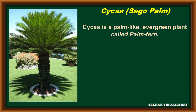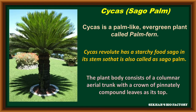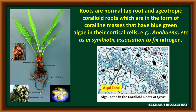Cycas plant is also called Sago palm. It is an evergreen plant also called palm fern. The starch extracted from its stem is called Sago, and because of this starch in its stem, this plant is called Sago palm. The plant body consists of a columnar aerial trunk with a crown of pinnately compound leaves present at the tip of the stem. The roots of these members are generally a tap root system. Some of the roots are ageotropic, called coralloid roots.